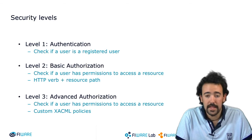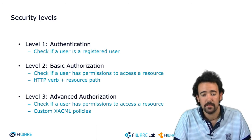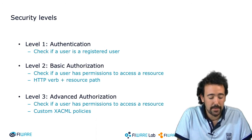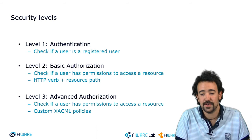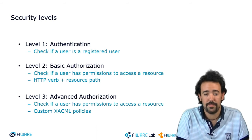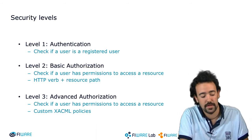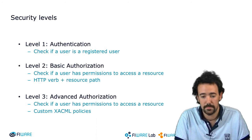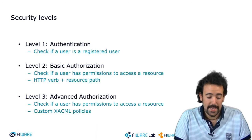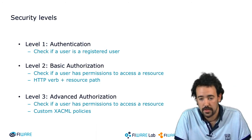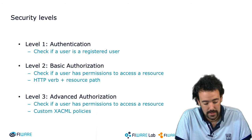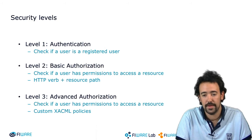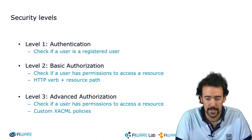Finally, the third level of security is similar to the second one, but in this case the permissions are not described as an HTTP verb and a resource — instead they are described using custom xACML policies. xACML is a policy protocol that we are not going to cover in detail here, because we have specific courses dedicated to understanding this protocol.